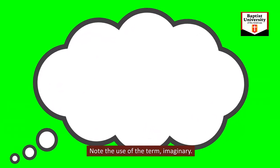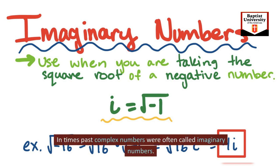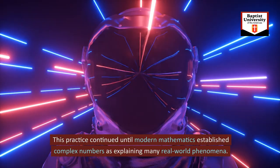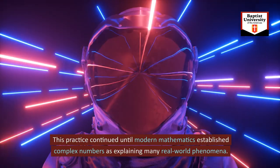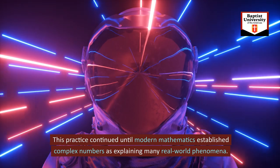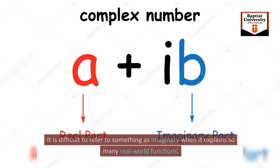Note the use of the term imaginary. In times past, complex numbers were often called imaginary numbers. This practice continued until modern mathematics established complex numbers as explaining many real-world phenomena. It is difficult to refer to something as imaginary when it explains so many real-world functions.